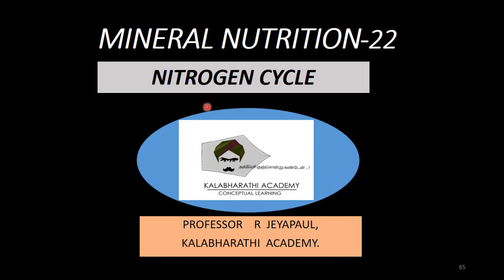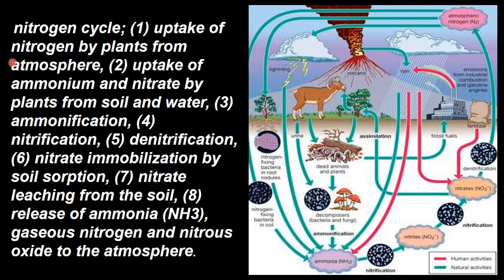From the atmosphere, the soil will be taken by the animals. In the nitrogen cycle, there are many important steps. The first step is the uptake of nitrogen by plants from the atmosphere.